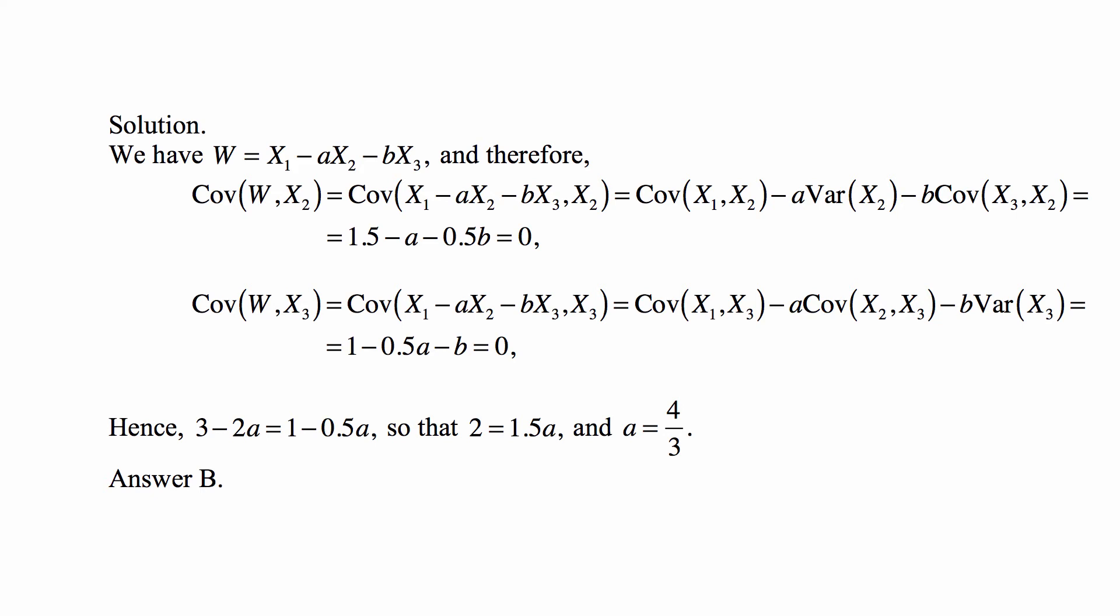And then we know that covariance of W and X2 is supposed to be 0, but that's covariance of X1 minus AX2 minus BX3 and X2. And covariance is linear in each of its variables, so we just rewrite it as covariance of X1 and X2 minus A times covariance of X2 and X2, which is variance of X2, minus B times covariance of X3 and X2. And then we plug in the values for these covariances and variance from the matrix, so it becomes 1.5 minus A minus 0.5 B equals 0.